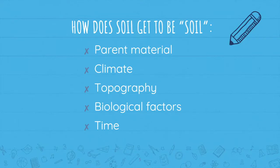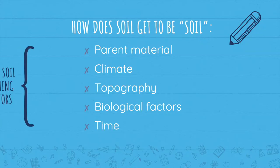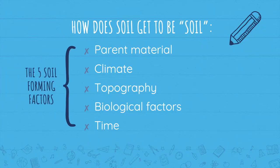So how does soil get to be soil? The truth is, there are many different natural processes that go into forming soil, but the ones I will discuss are parent material, climate, topography, biological factors, and time. You may have guessed — these are the five soil forming factors.